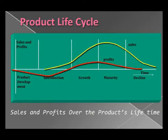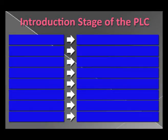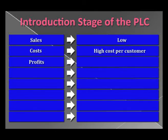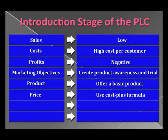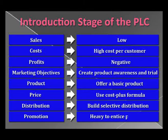According to the product life cycle stages: in the introduction stage of the PLC, sales are low, cost per customer is high, and profits are negative. Marketing objectives are to create product awareness and trial. The product offered is basic. Price is set using a cost-plus formula. Distribution is selective and promotion is heavy to encourage product trial.